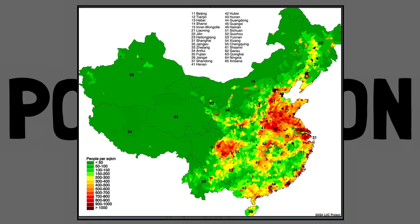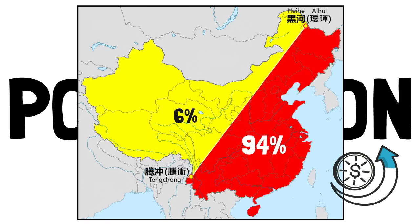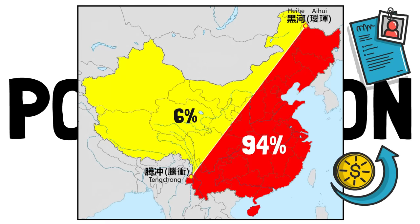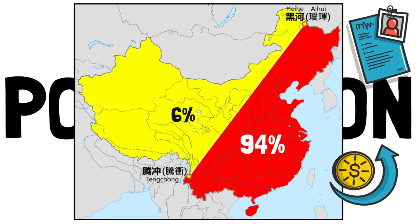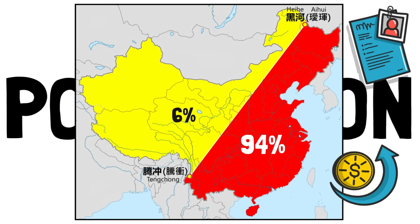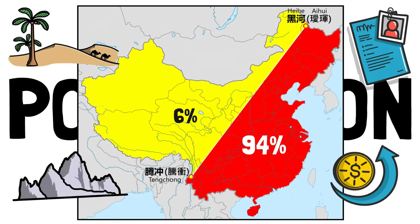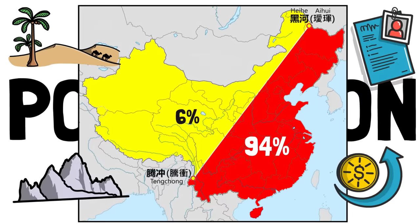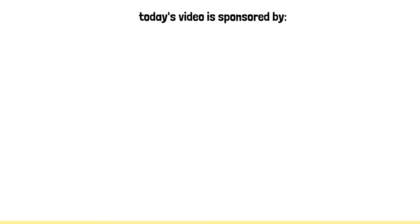In the east, on the coastal region, live 94% of the Chinese population, and in the west, in a territory roughly the same size, only 6%. The reasons why are fairly simple. Coastal cities have more economic development, and therefore more job opportunities, which leads to a better quality of life. And the environment and ecosystems in the west are also less habitable — mountains and deserts contrast with the plains of the east and the coasts.